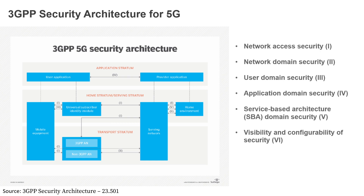Now, from the security architecture point of view, how can you build your security architecture? This is a question I've been asked several times. 3GPP document 23.501 explicitly mentions everything and gives details on domains, but most people don't understand what they mean by 'application stratum.' The application stratum is basically where your CNFs or VNFs are running the application. The home stratum is where you store subscriber and authentication key information of your network. The serving stratum is how you handle routing and exchange of different elements across the network.